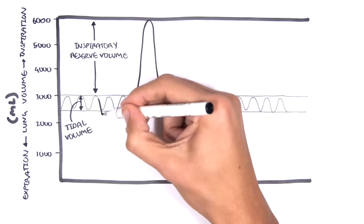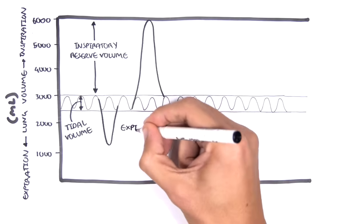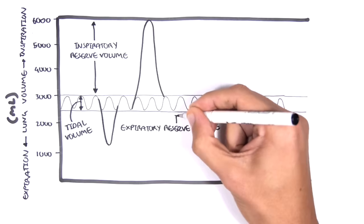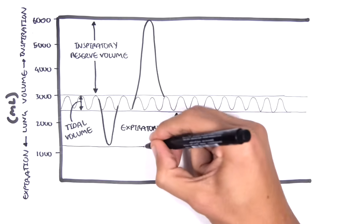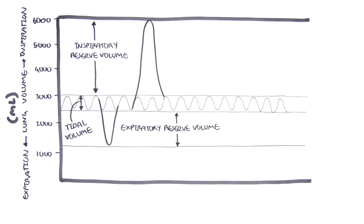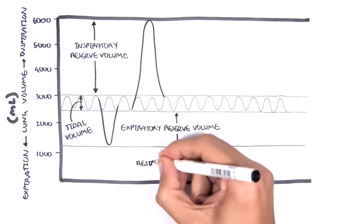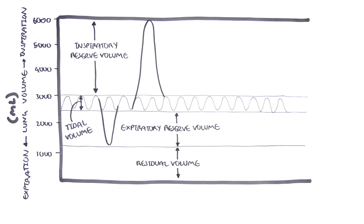The volume expelled by an active expiratory effort after passive expiration is the expiratory reserve volume, which is about 1 liter. And of course, you have the air left in the lungs after a maximal expiratory effort, which is the residual volume, about 1 liter as well.